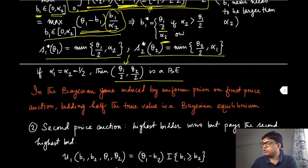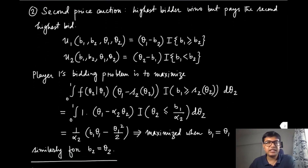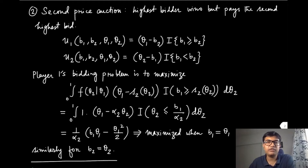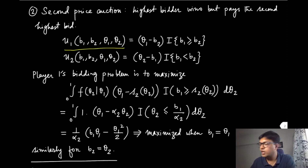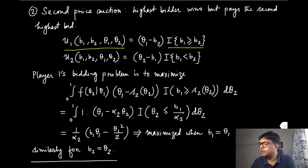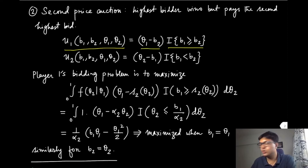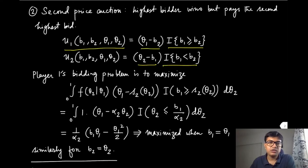Now let us move to a different type of auction: the second price auction. The highest bidder still wins, but pays the second highest bid. The only difference is in the payment. Player one's utility when it wins becomes theta1 minus b2, since it now pays the other player's bid. Similarly for player two.